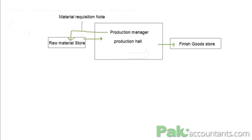Once the Material Requisition Note is received by the store manager, it will contain the number of units required and the signature of the production manager as evidence of authorization. If the store manager is satisfied that everything is in order and he has the material available, he will issue those materials to the person from the production hall so that production can carry on.